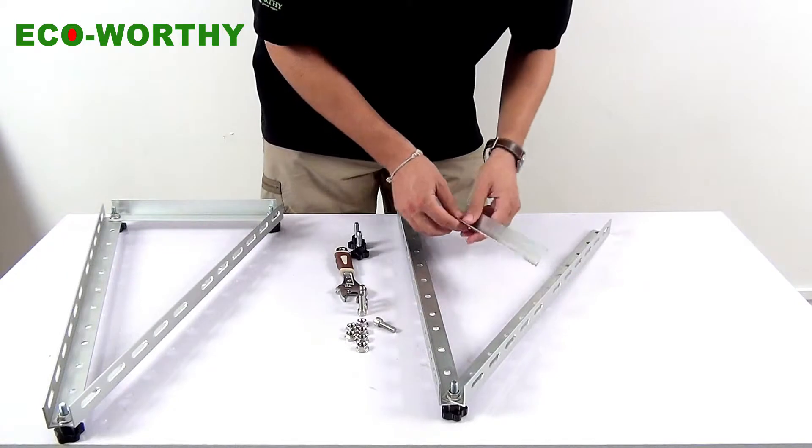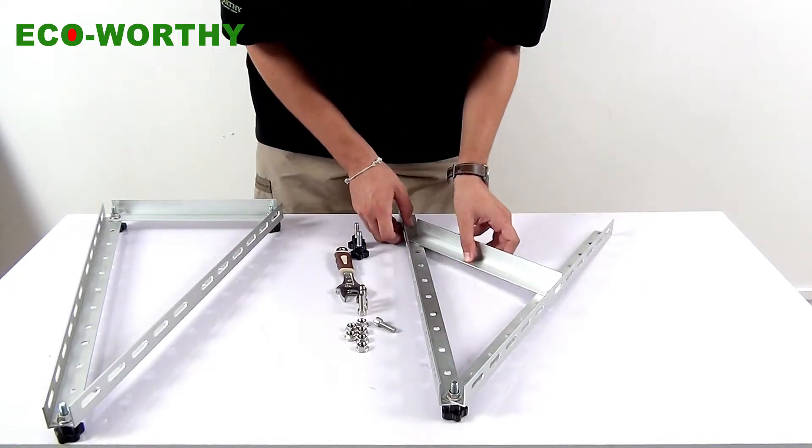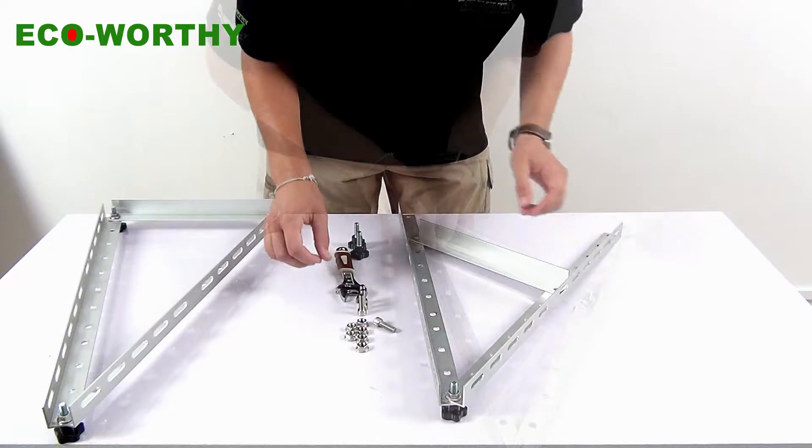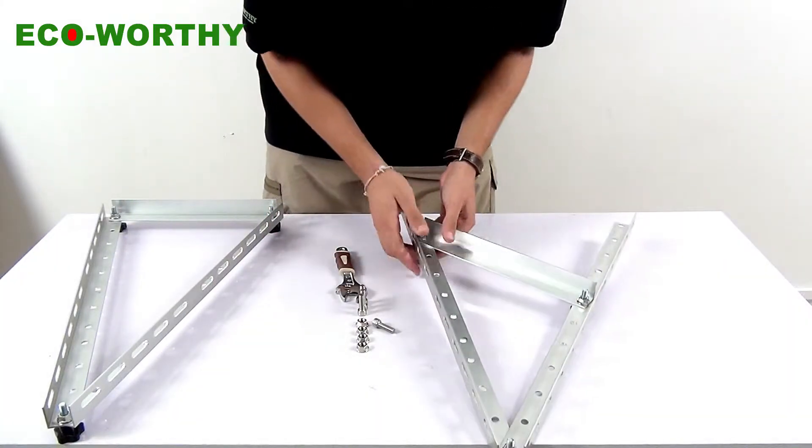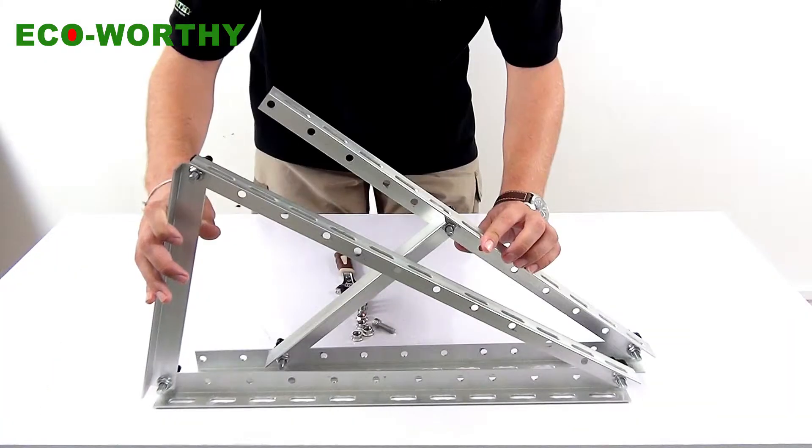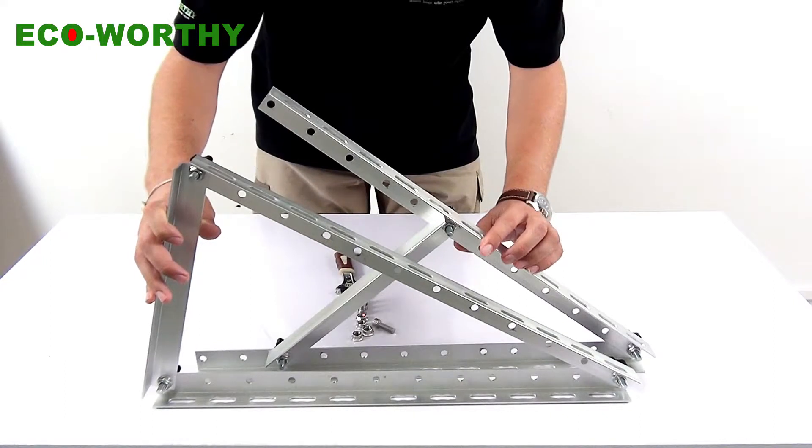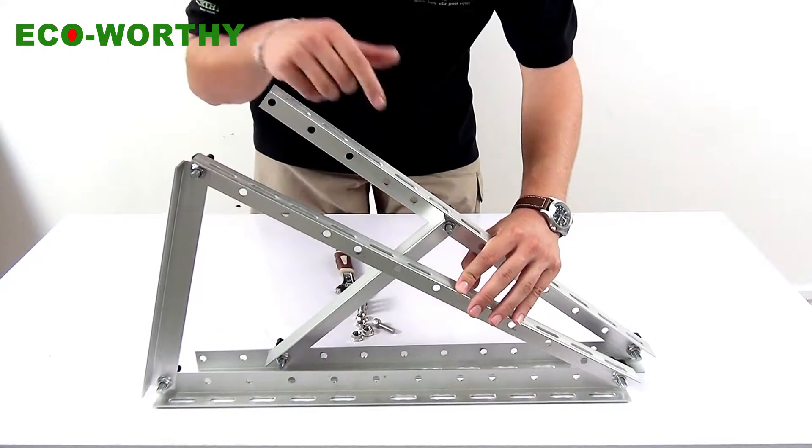For example we can operate like this. It's a simple step. As you can see we have two very different angles in these two sets of rails.